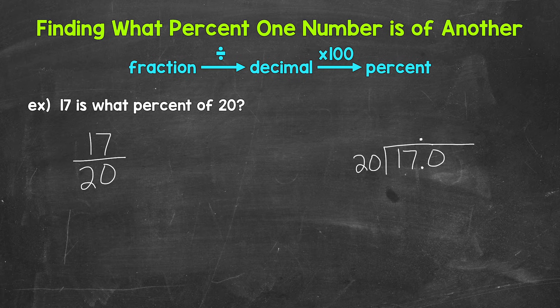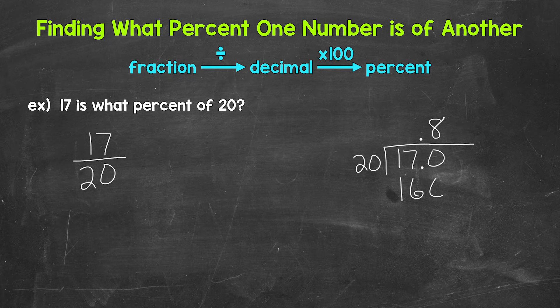That gets us to 160. So we need to put the 8 above the zero here, since we used that zero and thought of this as 170. That will line us up correctly.